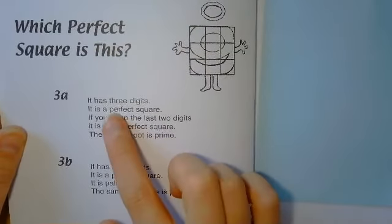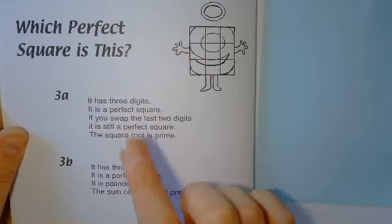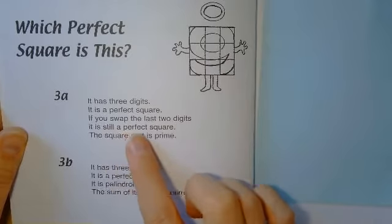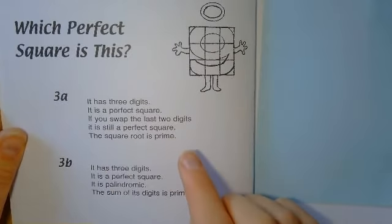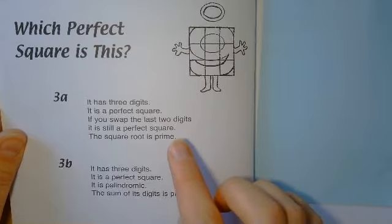So the first part of the problem: it's got three digits, it's a perfect square, so it's a square number. If you swap the last two digits, it's still a perfect square. And the square root of the number is prime.